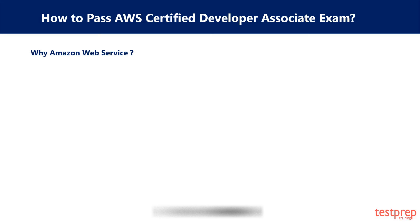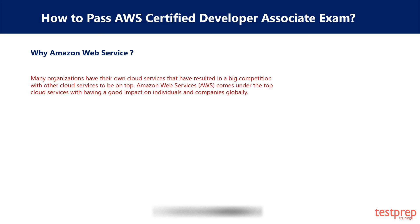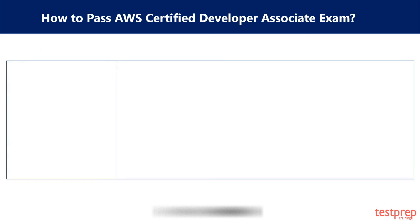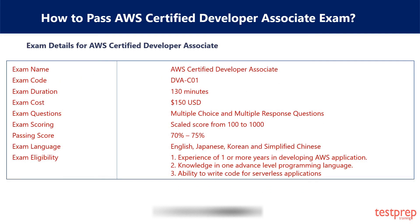Why Amazon Web Services? Many organizations have their own cloud services, resulting in big competition to be on top. Amazon Web Services comes under the top cloud services, with a good impact on individuals and companies globally. AWS has three certification levels starting from associate level to professional level. AWS Certified Developer Associate is one of the basic AWS certification architectures. You can see the basic exam details for AWS Certified Developer Associate in the table below.